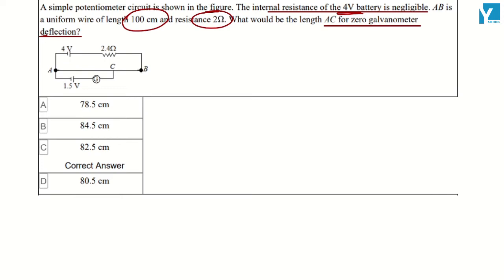AB is 100 cm. This is the entire resistance. First of all, I will remove the drop across AB. The voltage drop is given to you. How much will it be? 4 volts.